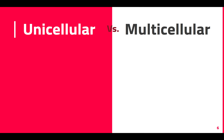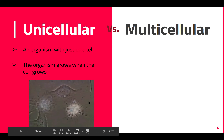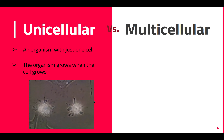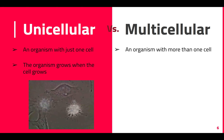Unicellular versus multicellular — think of the card game Uno. You call out uno when you have one card; in Latin, one is 'uni,' so unicellular is an organism with just one cell. The organism grows only when that one cell grows. This is an amoeba — you can see it here — and when that cell grows, the organism grows bigger. If that one cell dies, then the organism is going to die.